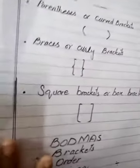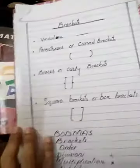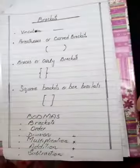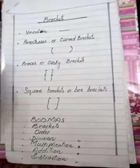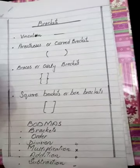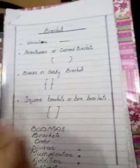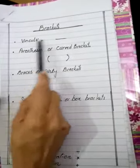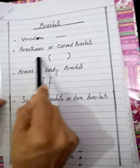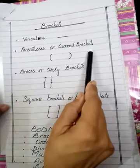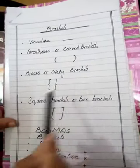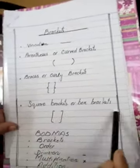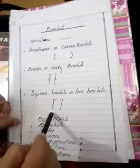Revise kerne se pehle, hum basic concept ko thora revise ker leete. How many brackets are used in this exercise? There are 4 brackets. First one is vinculum or bar brackets. Second one is parenthesis or curve bracket. Third one is braces or curly bracket. And fourth one is square brackets or box brackets.